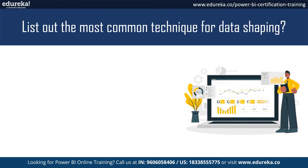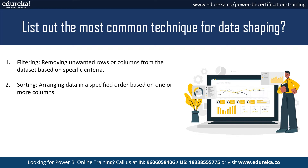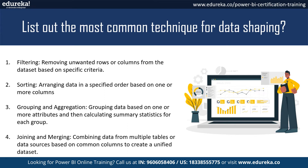Next, list out the most common techniques for data shaping. First, we have filtering, which removes unwanted rows or columns from the dataset based on specific criteria. Second, sorting arranges data in a specified order based on one or more columns. Third, grouping and aggregation groups your data based on one or more attributes and calculates summary statistics for each group. Then, joining and merging combines data from multiple tables or data sources based on common columns to create a unified dataset.